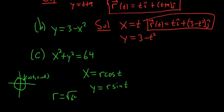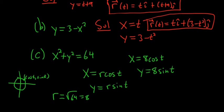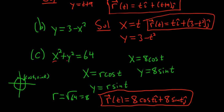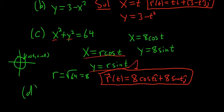Our r here is 8, since it's the square root of 64. So we get x equals 8 cosine t and y equals 8 sine t. We can now write the answer as a vector-valued function: r(t) equals 8 cosine t i-hat plus 8 sine t j-hat. Whenever you have a circle centered at the origin, use these parametric equations and then convert to a vector-valued function.